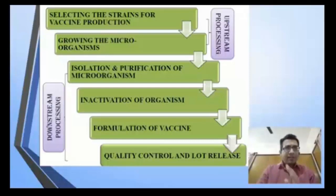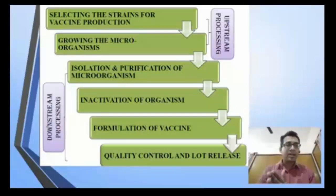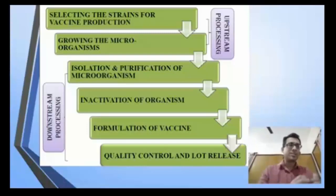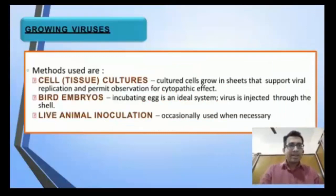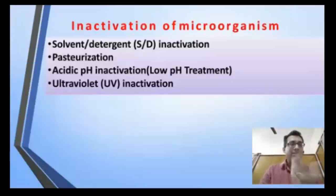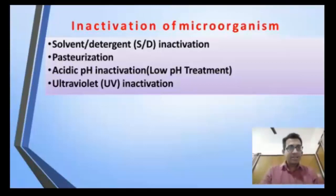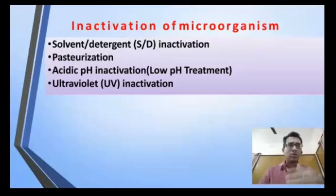The steps for vaccine production are: select a particular strain of the microorganism; grow, isolate, and purify it; then attenuate it (for live attenuated vaccines), kill it (for killed vaccines), or separate the subunit; then produce the final vaccine by adding other components and release it. Bacteria can be grown by batch culture or continuous culture. Viruses can be grown by cell culture, bird embryo, or live animal inoculation. Inactivation or attenuation can be done by adding detergents or solvents, pasteurization, lowering the pH, or using ultraviolet rays.